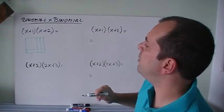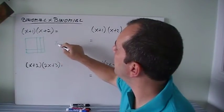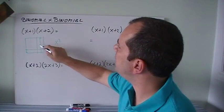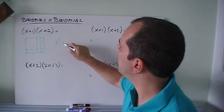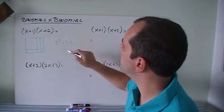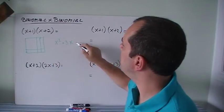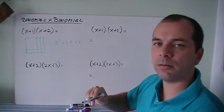What do we have? Well, it looks like I have 1 x squared, and I got 1, 2, 3 x's, and just 2 unit tiles.